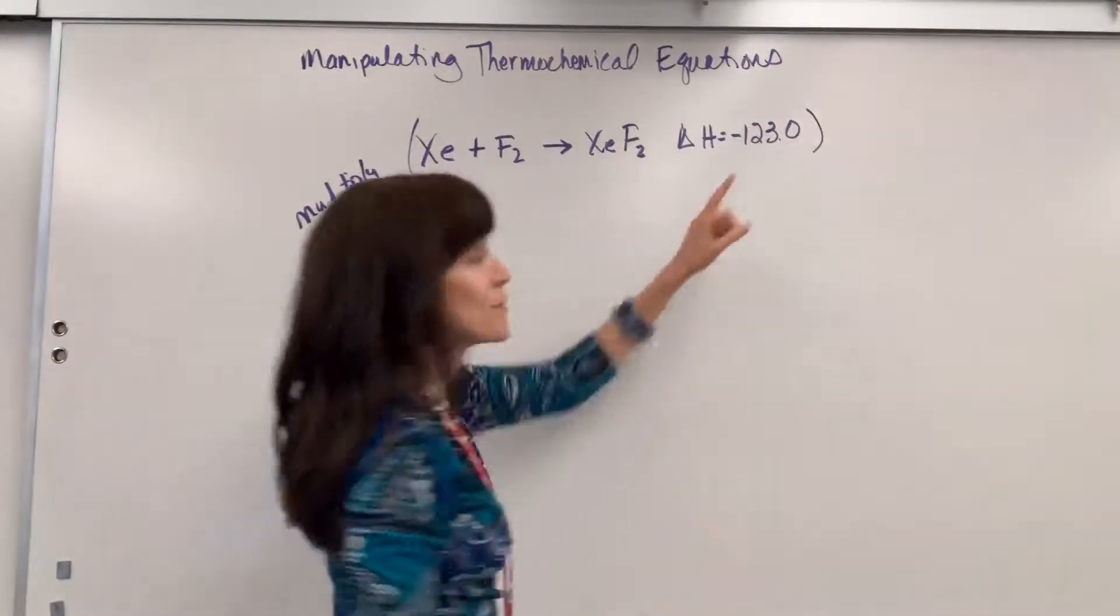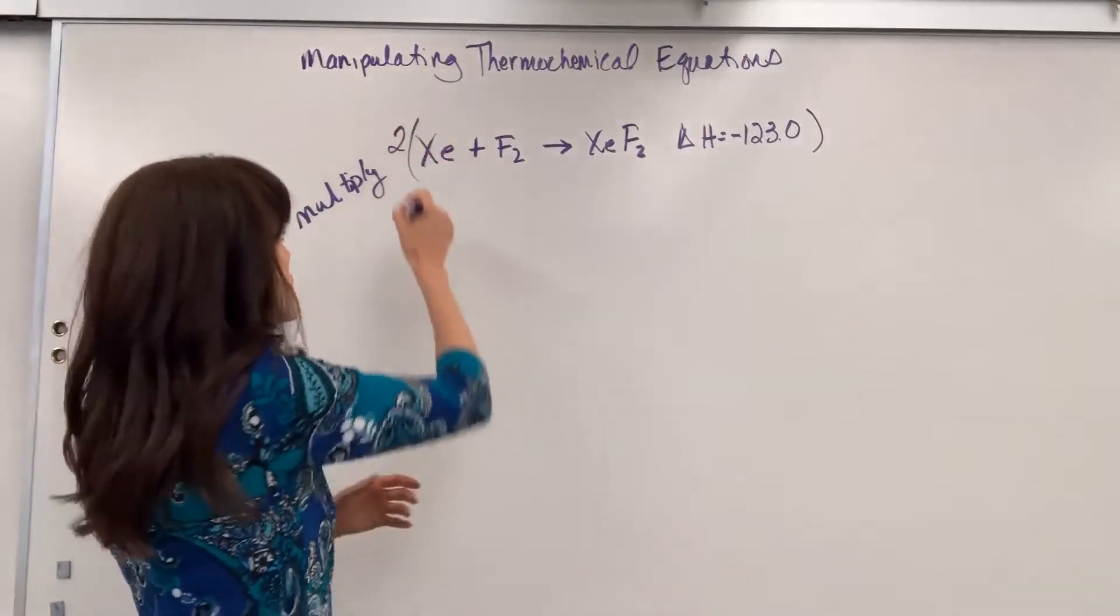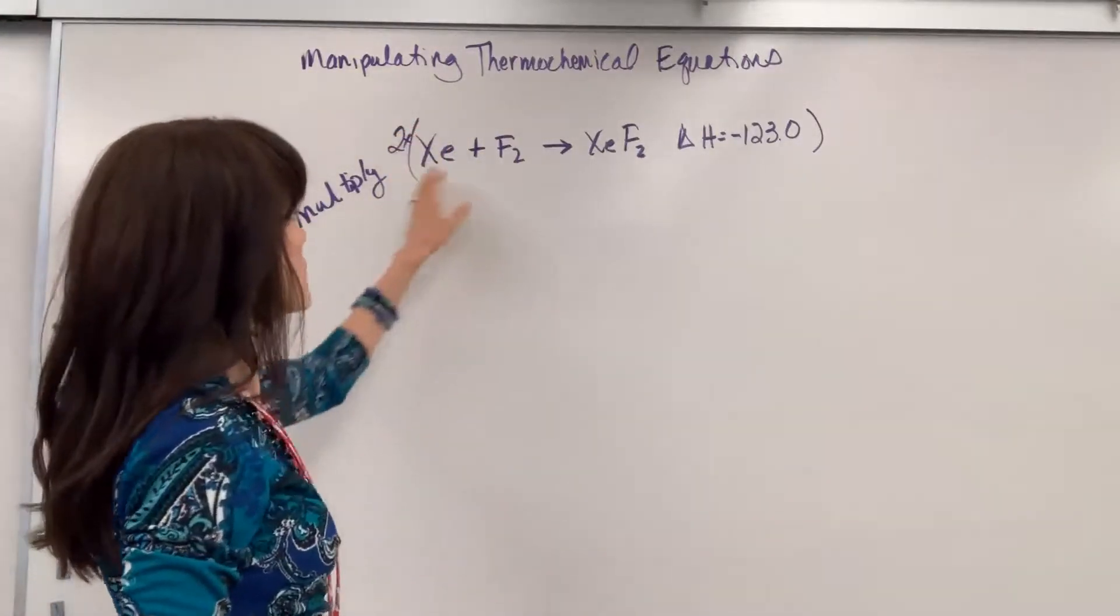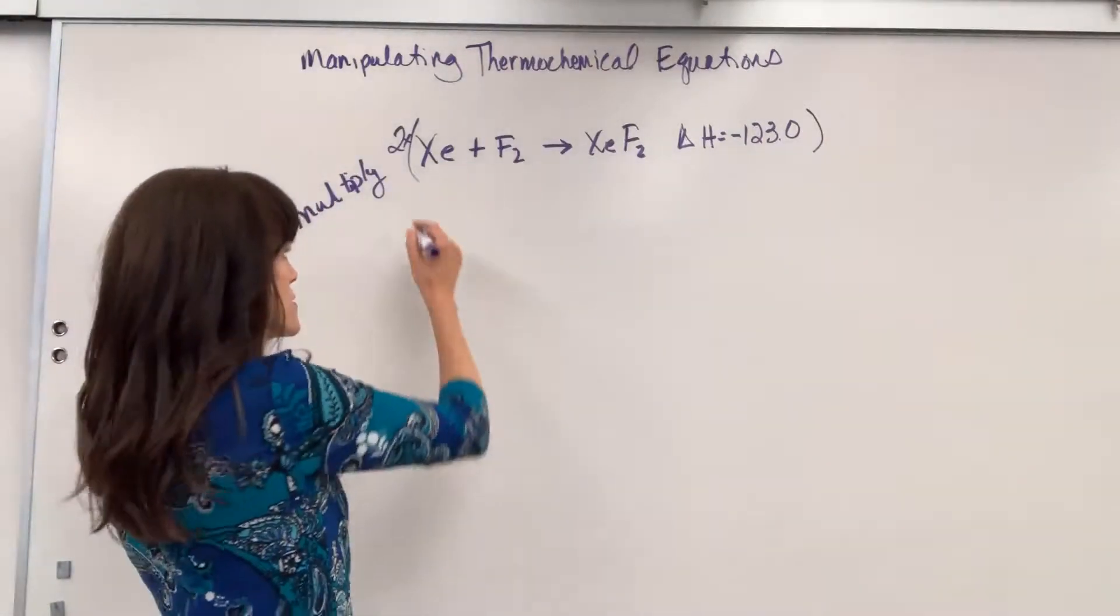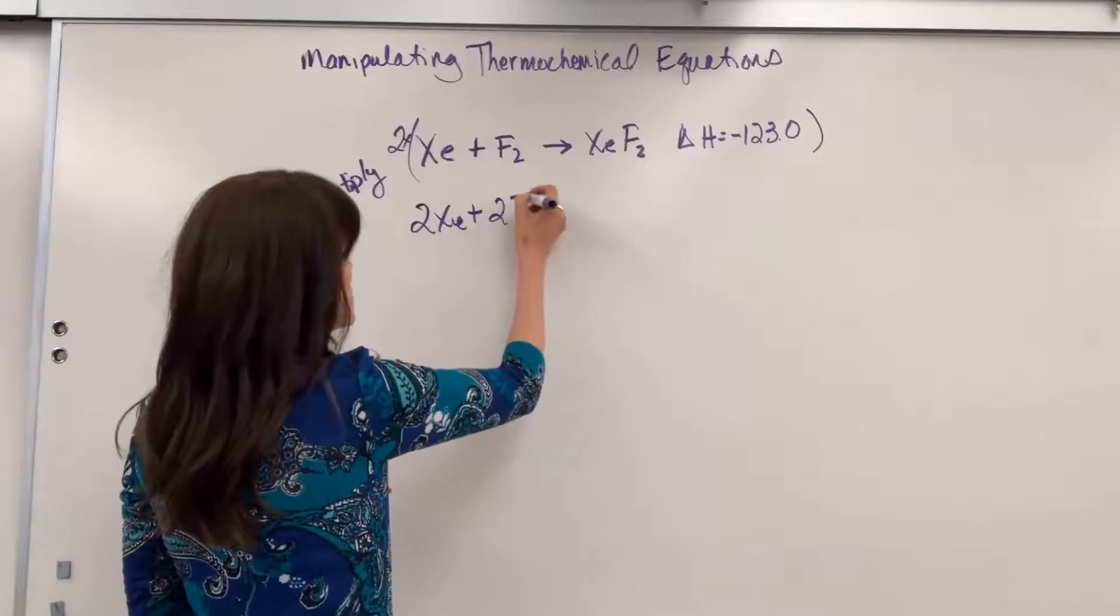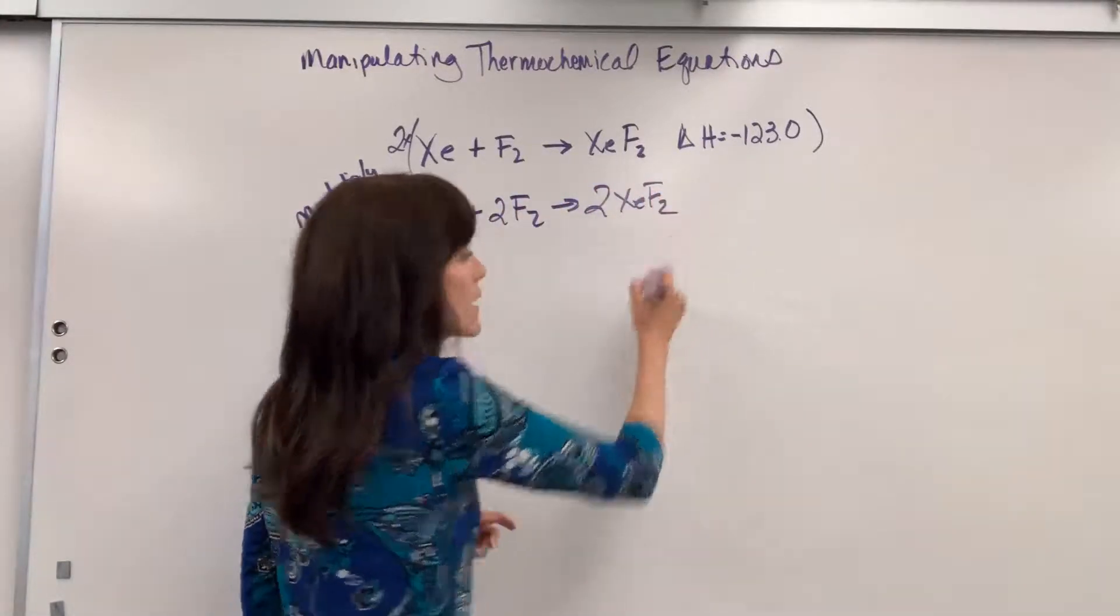Now notice I'm including the delta H or enthalpy and we multiply this whole thing through by two. I remember that's just a ratio. So I could equally say, with 100 percent truth, two moles of xenon plus two moles of fluorine equals two moles of the xenon difluoride.